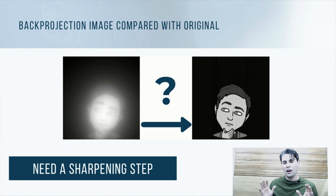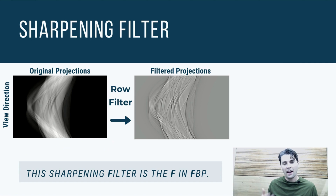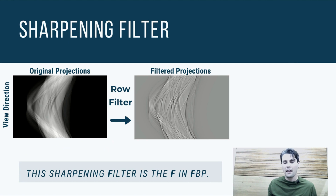You can have a mathematically equivalent sharpening in the detector space or in the image space. That sharpening filter goes along the rows in the sinogram — the sinogram on the left is the original and the sinogram on the right is the filtered sinogram. The edges are much sharper on the filtered version, which helps us get an accurate image in the end. The filter goes along the row direction in the detector domain, not in the view domain — we filter each row in the detector domain to generate that filtered sinogram. The 'F' in filtered back projection stands for filter.